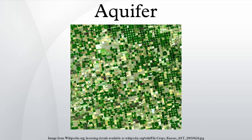An aquifer is an underground layer of water-bearing permeable rock or unconsolidated materials from which groundwater can be extracted using a water well. The study of water flow in aquifers and the characterization of aquifers is called hydrogeology.